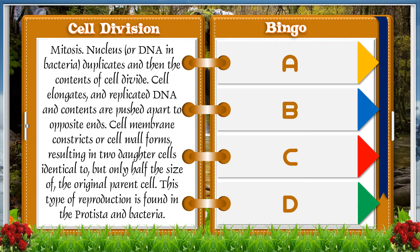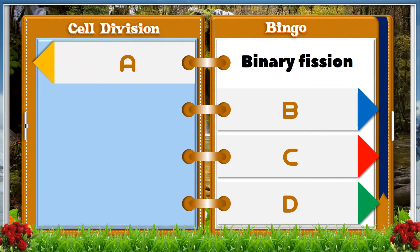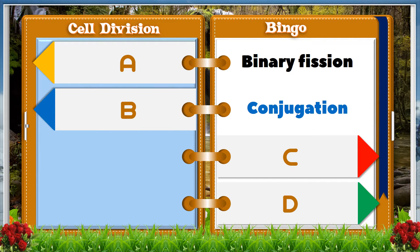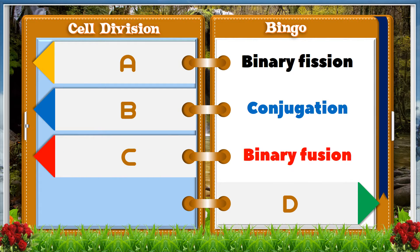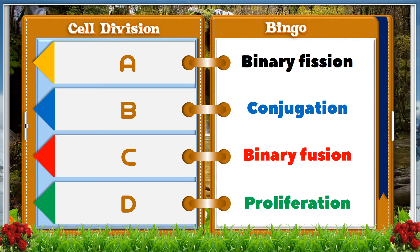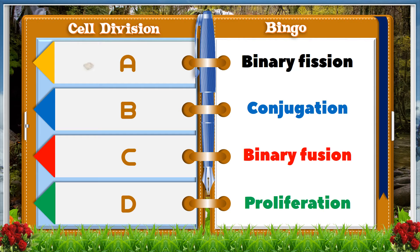This type of reproduction is found in Protista and bacteria. A binary fission, B conjugation, C binary fusion, D proliferation. And the answer is A binary fission.